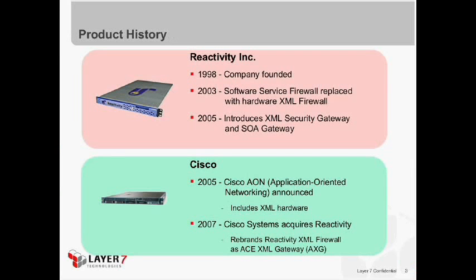In 2005, they split the product line into two: the XML security gateway, focused primarily on XML security, and a cell gateway which included data-adaptation features. At that point, Reactivity had a pretty strong product and was doing fairly well in the market as an independent company.